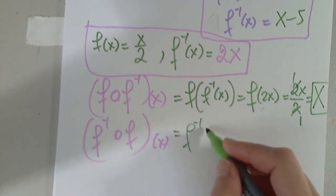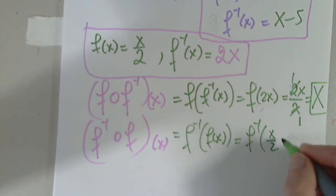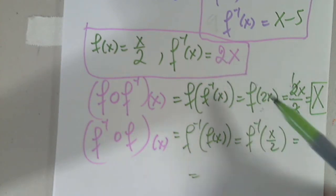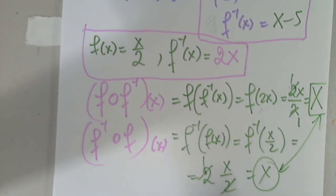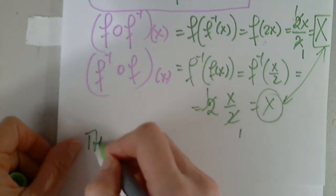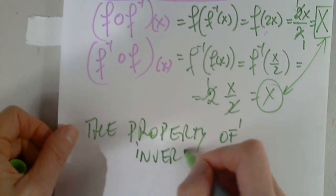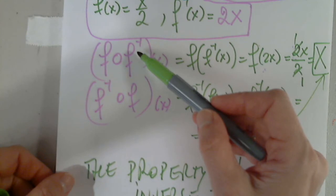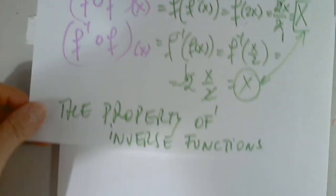Let's see what happens with the other one, when I have f inverse of f of x. So this is f inverse of f of x, which is x over 2. And now I have to plug it in this. So in f inverse, x becomes x over 2. So 2 times x over 2. I simplify again, and I get x. And this happens only if the two functions are inverses of each other.